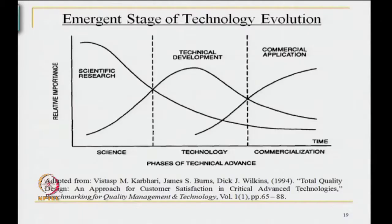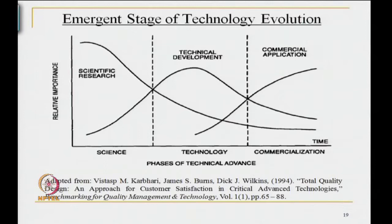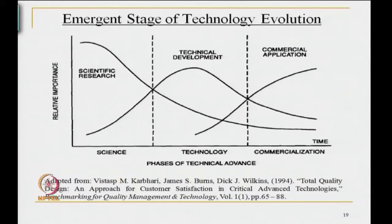This diagram borrowed from Vistas M. Karbhari, James S. Burns, and Dick J. Wilkins' work on Total Quality Design and Approach for Customer Satisfaction in Critical Advanced Technologies marks the relationship between science, technology and commercialization. It shows the phases of technological advances and draws a comparative growth and dip profile of scientific research, technical development and commercial application — a clear diagram of the relationship among science research, technology development and commercial applications.